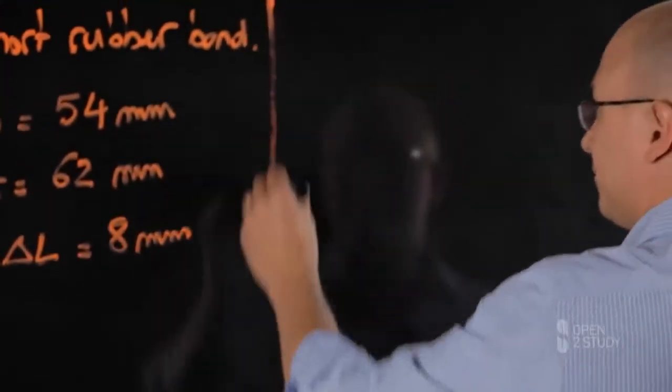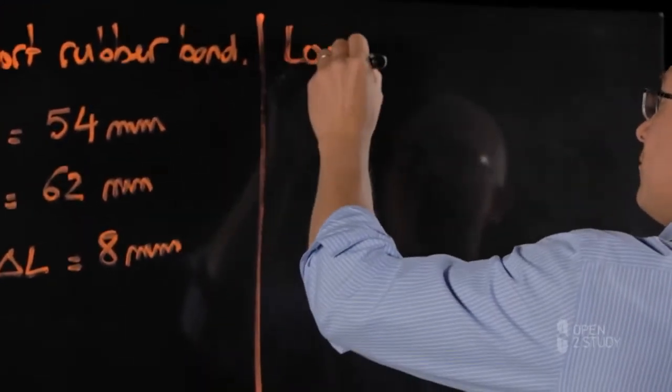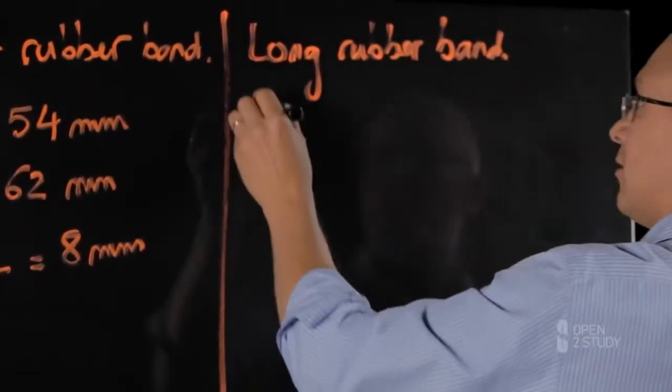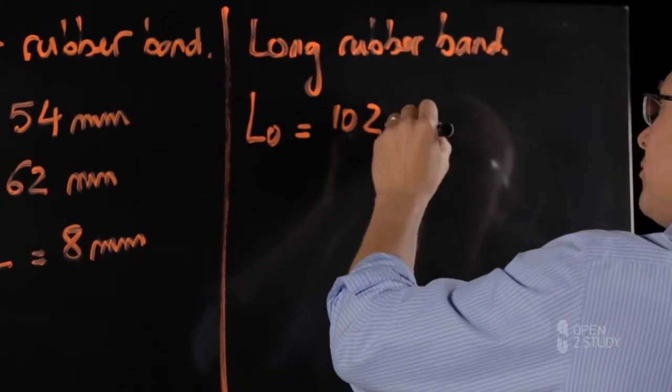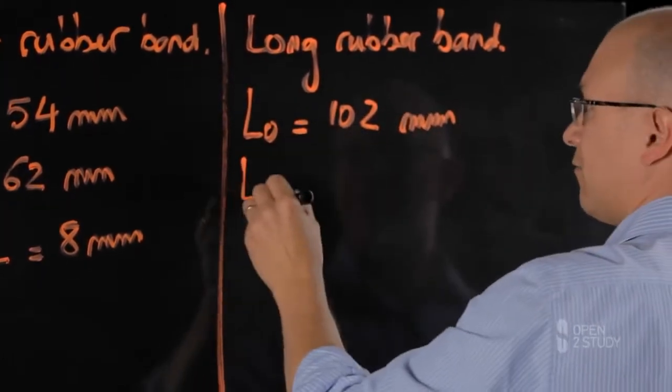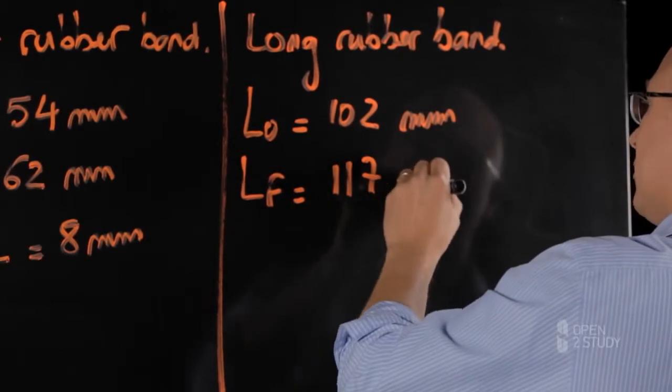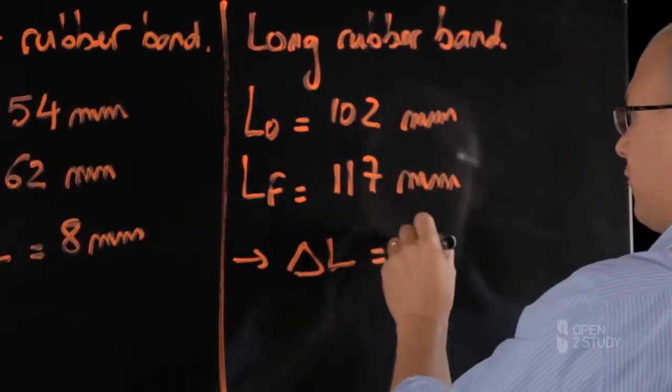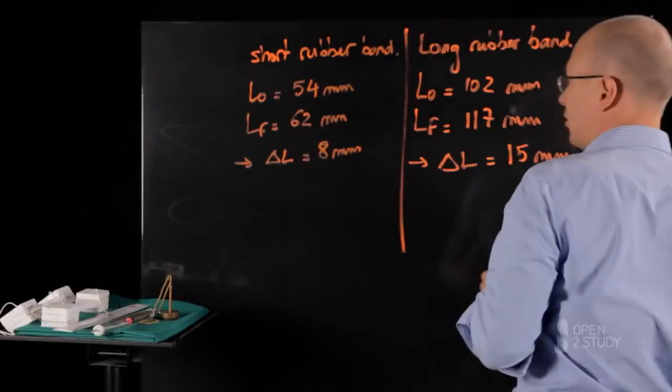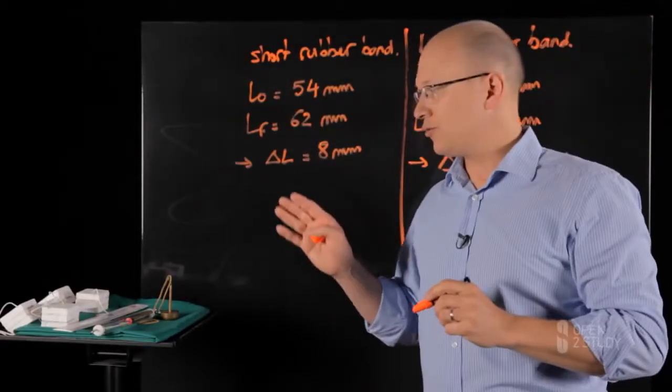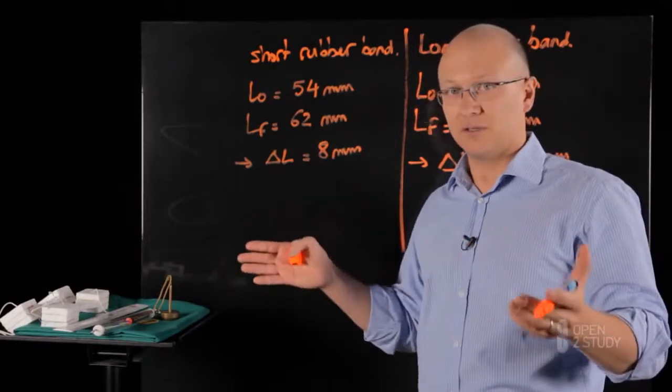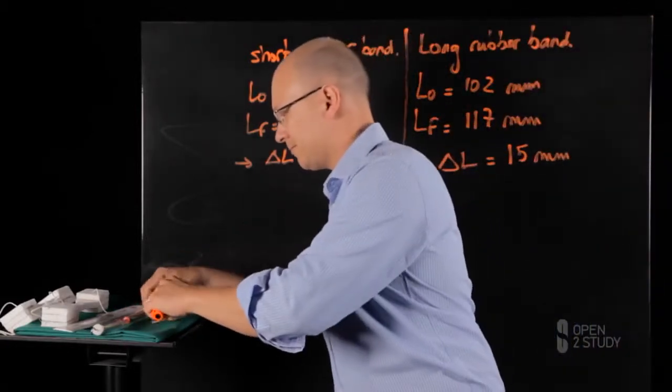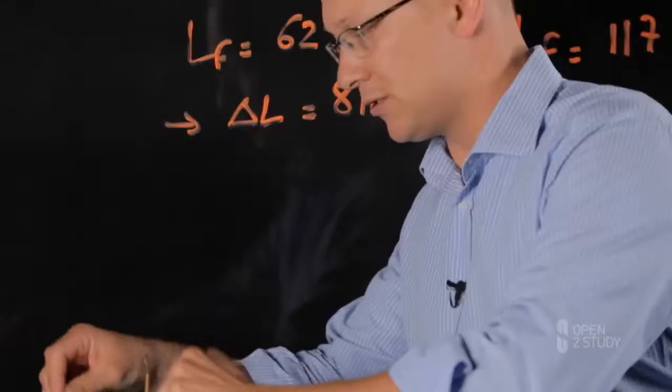So we have a long rubber band. The initial length is 102 mm, and the final length is 117 mm. That gives us an elongation, delta L, of 15 mm. What that shows is if you use the elongation or change in length to characterize the material's behavior, you don't have the same number. However, it is the same material. It's the same rubber.